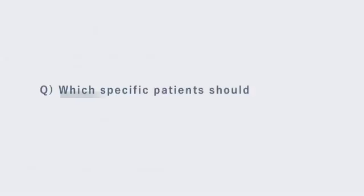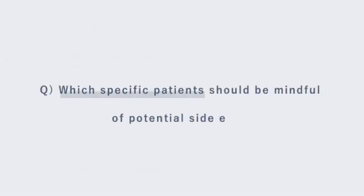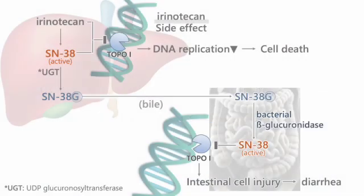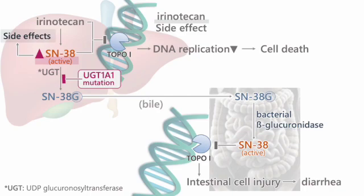Which specific patients should be mindful of potential side effects? Patients who have a UGT1A1 mutation may experience severe side effects like diarrhea and myelosuppression when treated with irinotecan for cancer. If glucuronic acid conjugation doesn't occur properly, SN38 remains active, leading to more severe cell damage.